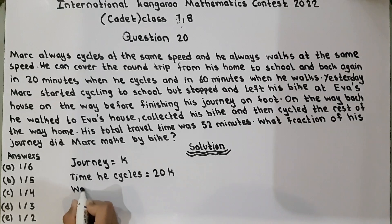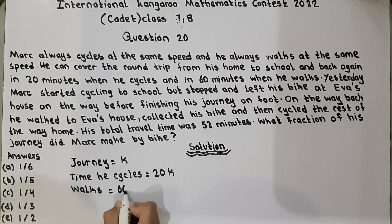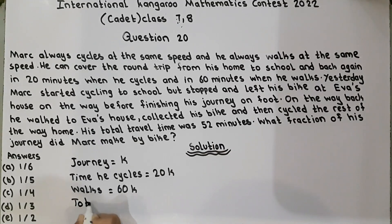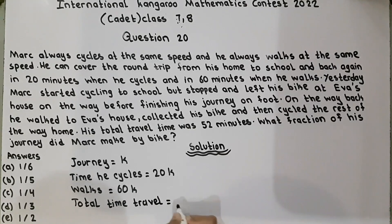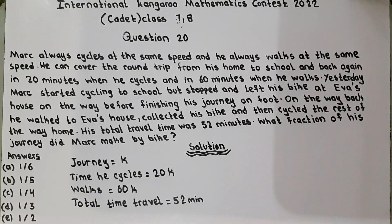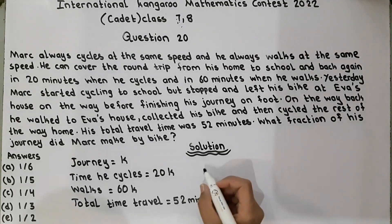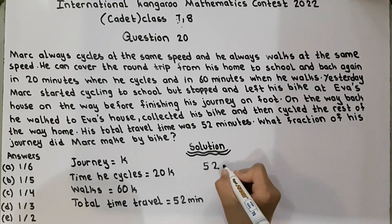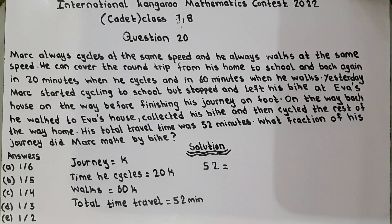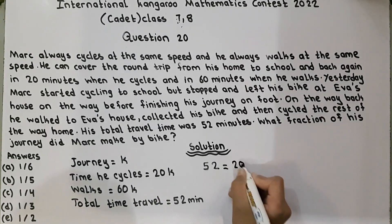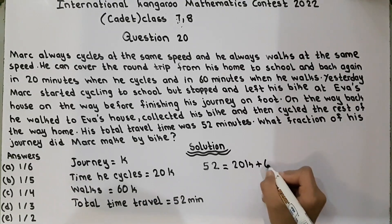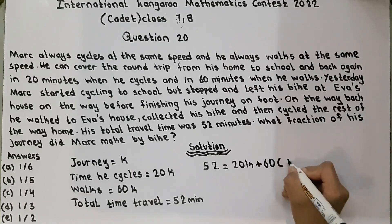The time he walks is equal to 60 minutes and K. Total travel time was 52 minutes. So 52 is equal to 20K plus 60 times (1 minus K), since the walking portion is (1 minus K) of the journey.